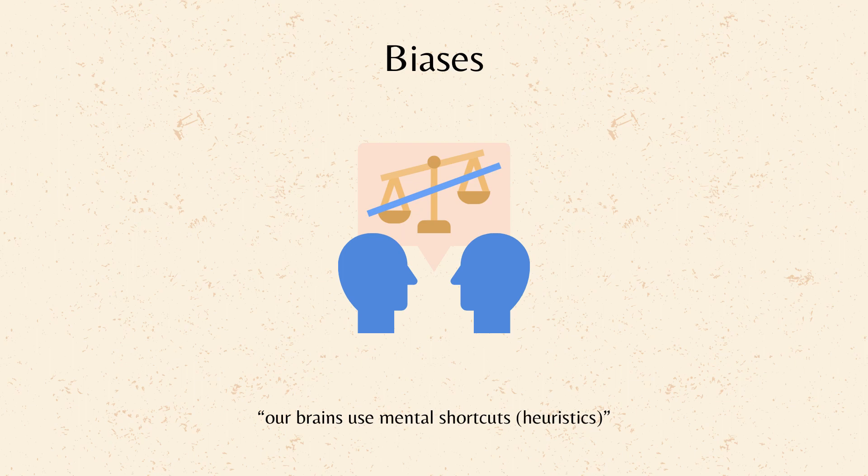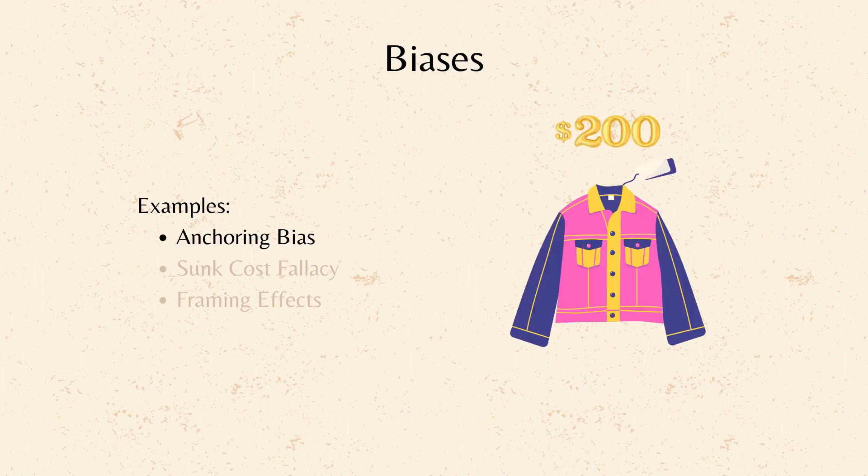Biases. Our brains also use mental shortcuts, called heuristics, which can sometimes lead to biases. For example, the anchoring bias makes us rely too heavily on the first piece of information we get. You see a jacket with an original price tag of $200. Now it's marked down to $100. The initial high price anchors your perception of value, making the sale price seem like a great deal, even if $100 might still be high for that particular jacket.